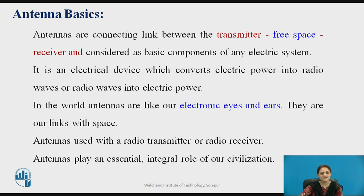Now see the antenna basics. Antennas are nothing but the connecting link between the transmitter, free space, and receiver, and it is also considered as the basic component of any electric system. It is an electric device which converts electric power into radio waves or radio waves into electric power. Thus an antenna can be used to convert one form of energy into another form. In the world, antennas are like our electronic eyes and ears — they are our links with the space. Antennas are used with radio transmitters or radio receivers and play an important role in our civilization.